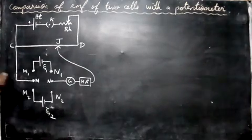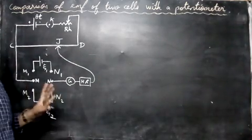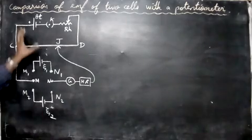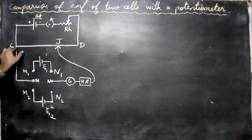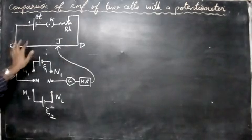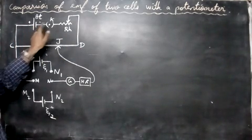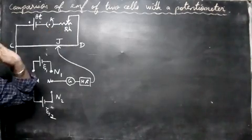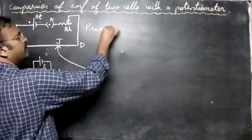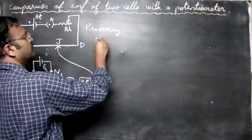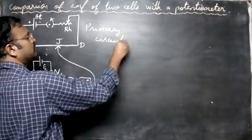Let us now study about the comparison of two cells with the potentiometer. So for this we have the potentiometer here at the top. This is a potentiometer - CD is a potentiometer wire. Then we have a battery, the key, a rheostat. This part is called the primary circuit.